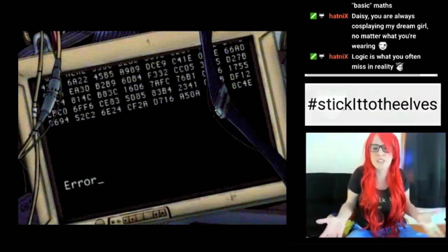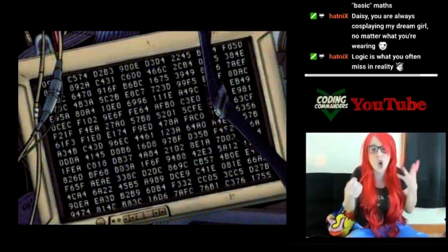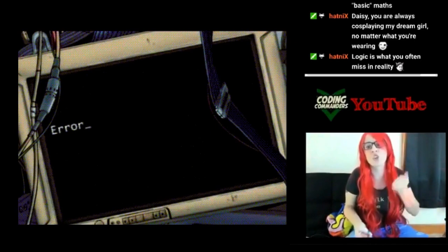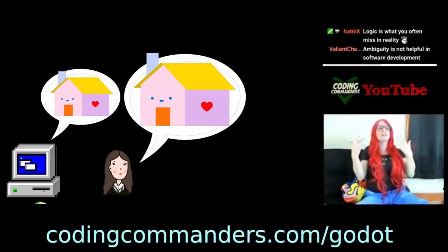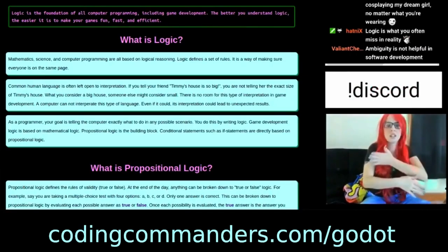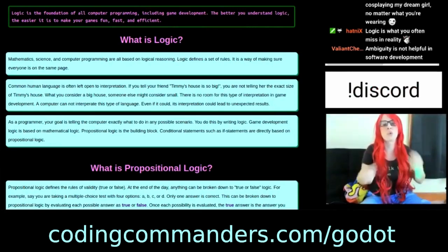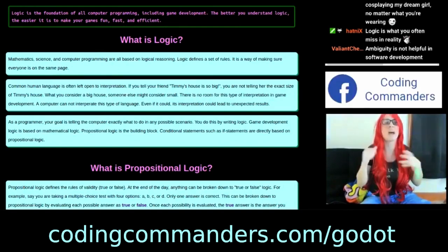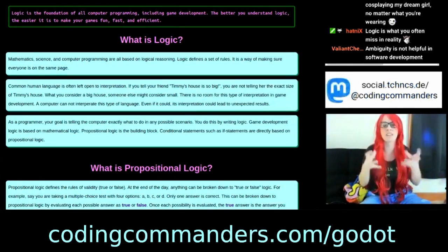A computer can't interpret this type of language and even if it could, its interpretation could lead to unexpected results. If what you think is a big house is different than what the computer thinks is a big house, you're going to get unexpected results. So we have to learn a set of rules that the computer's able to understand. We have to use language that's specific, very specific as to what we want to happen and when.